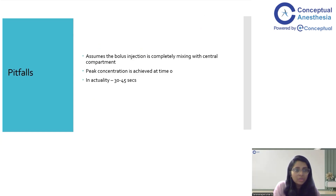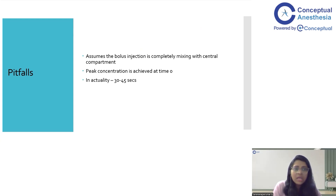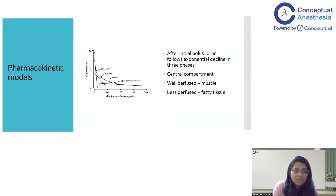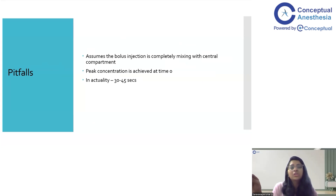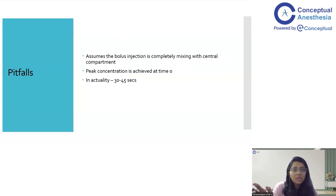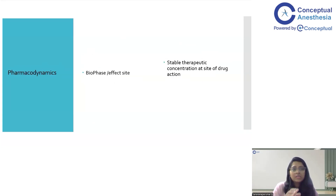The three-compartment model is very important to note. However, its pitfall is that it assumes the bolus is given into the central compartment and that peak concentration is reached at time zero. In actuality, peak plasma concentration is only achieved 30 to 45 seconds after drug administration. There are pharmacokinetic models that account for this lag, but that is beyond the scope of this lecture. The key pitfall to remember is that the three-compartment model assumes peak concentration is reached at time zero, which is never truly the case.